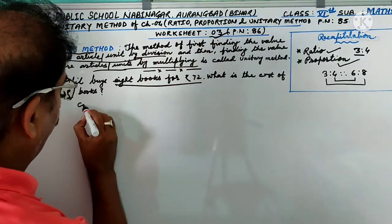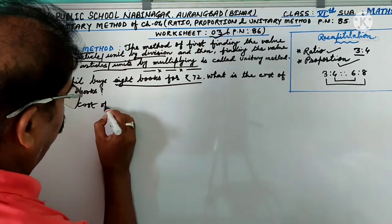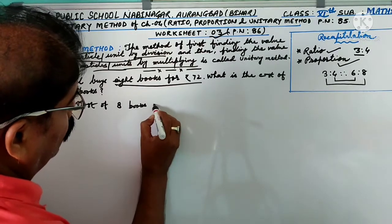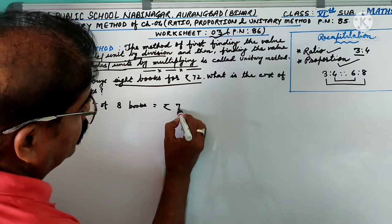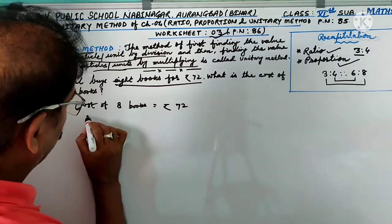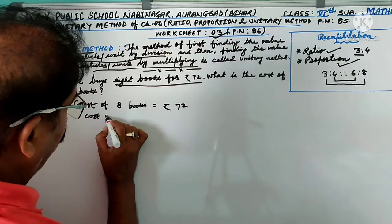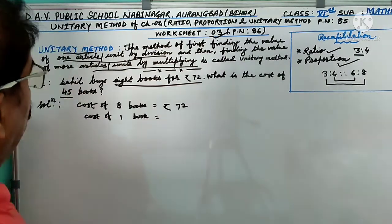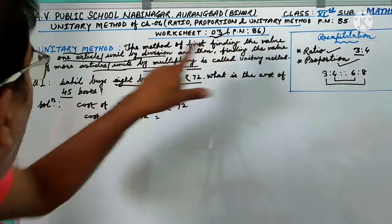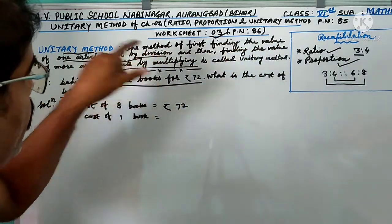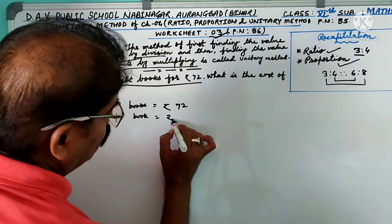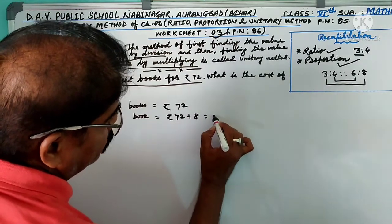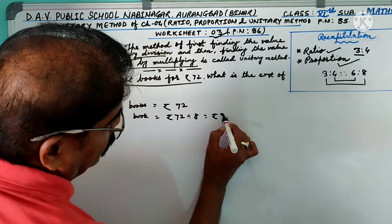In essence, cost of 8 books equal to rupees 72. So cost of 1 book: first finding the value of 1 article by division, rupees 72 divided by 8, that means rupees 9.